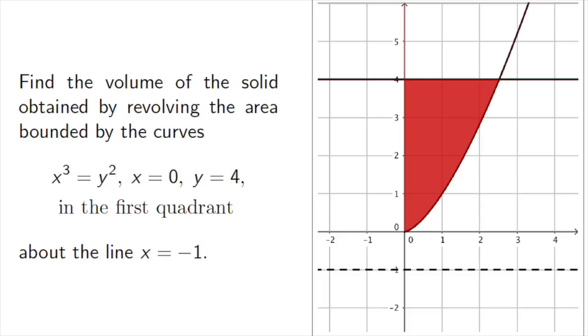We would like to find the volume of the solid obtained by revolving the area shown here, bounded by the curves x³ = y², which is an implicit graph, x = 0, y = 4, and everything in the first quadrant. We want to rotate it around the line x = -1.